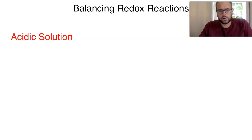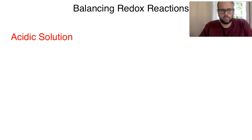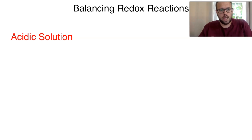Hi everybody, welcome to the next lecture. In this lecture, we are going to be working on balancing redox reactions. When we get to redox reactions, we are really trying to balance electron transfer between different species in solution. In order to do this, we usually break down our reactions into what's known as half reactions, where we look at the oxidation and the reduction portions. This can be done in acidic medium or basic medium where there would be hydroxide present.